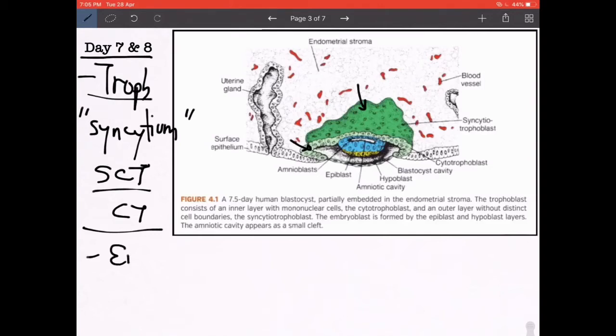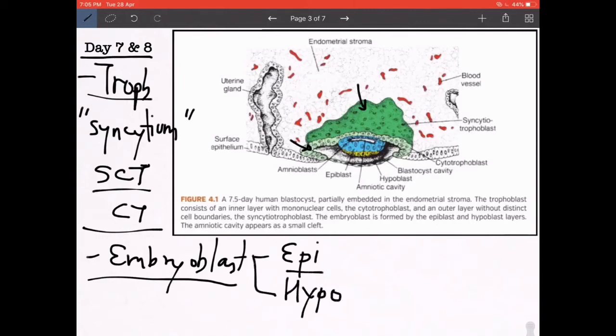Distinction number 2 happens in the embryoblast. Now if you see, there are 2 colors there. What you see in the light blue are slightly taller cells, and these are known as the epiblast. And what you see in yellow are slightly low cuboidal, and these are known as the hypoblast. So that's the differentiation occurring in the embryoblast, and this leads to the formation of what is known as a bilaminar embryonic disc.